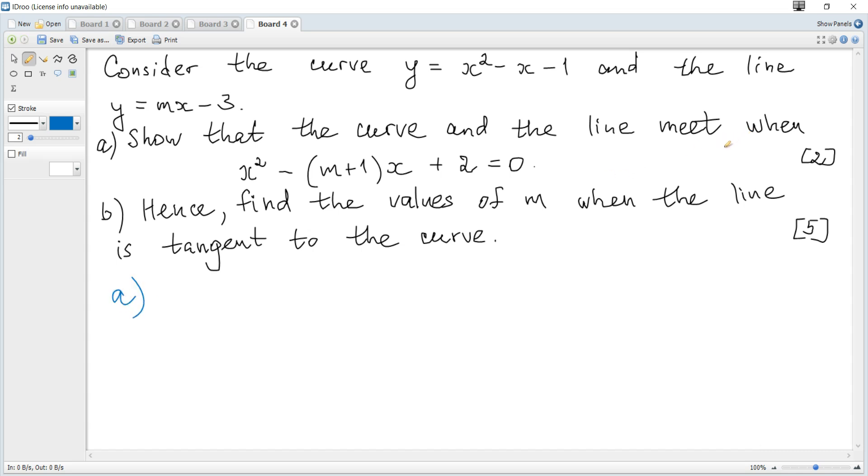Meet implies a point or points of intersection. To find points of intersection we consider simultaneous equations, and since it is given y equals y, we can just equate x squared minus x minus 1 to mx minus 3.